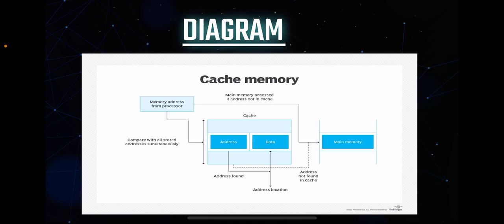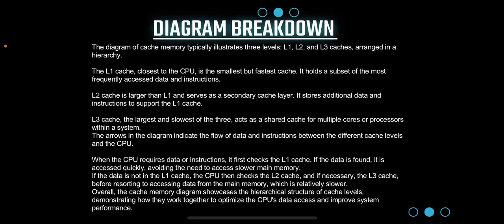When the CPU requires data or instructions, it first checks the L1 cache. If the data is found, it is accessed quickly, avoiding the need to access slower main memory. If the data is not in the L1 cache, the CPU checks the L2 cache and, if necessary, the L3 cache, before resorting to accessing data from main memory. Overall, the cache memory diagram showcases the hierarchical structure of cache levels, demonstrating how they work together to optimize the CPU's data access and improve system performance.